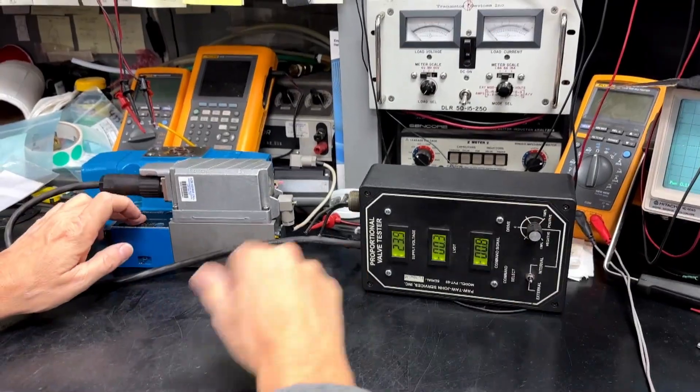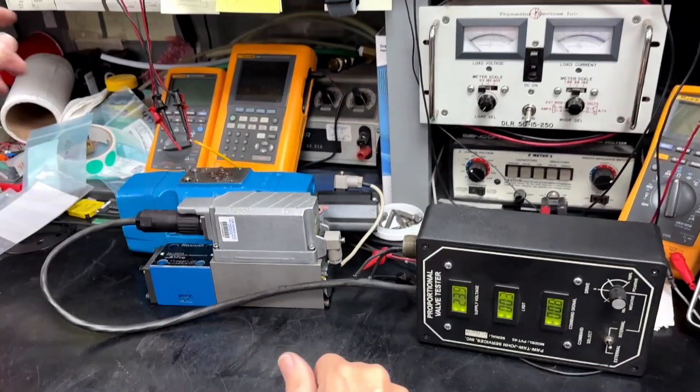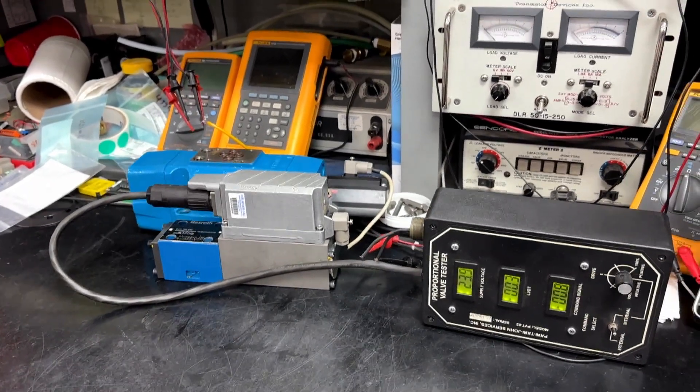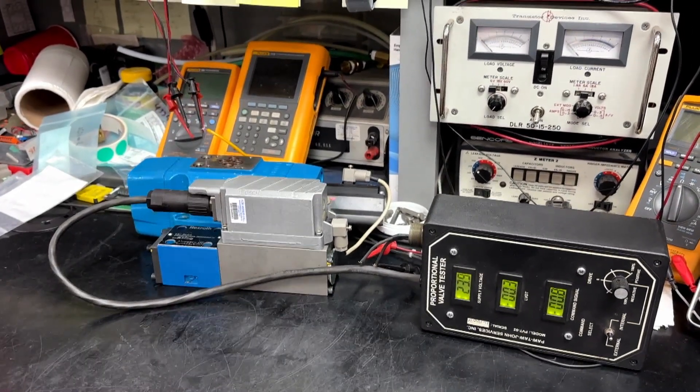Once we confirm this valve control is working, we will mount it on the output and put it on our machine for final testing. That will confirm we do have hydraulic flow coming through the system.